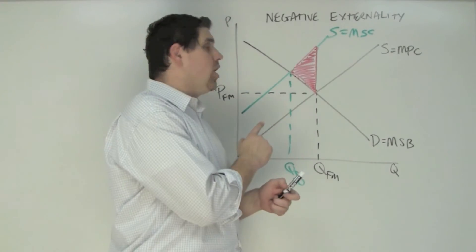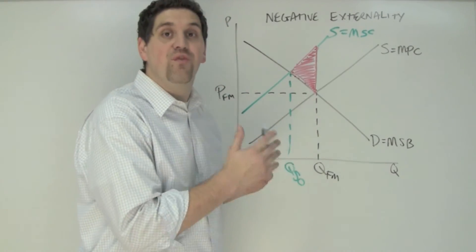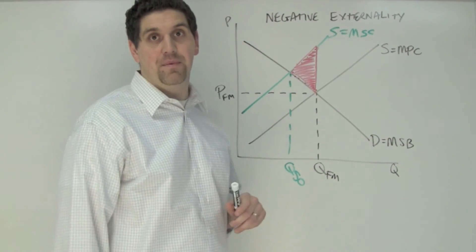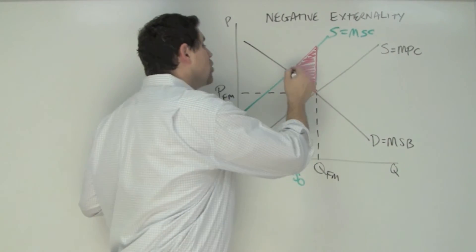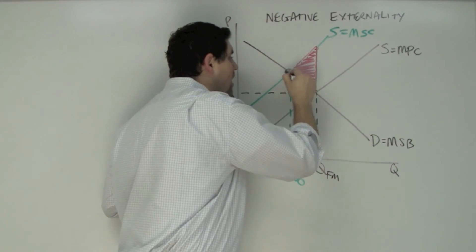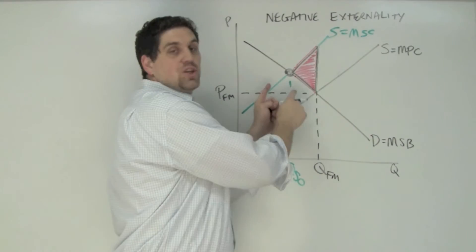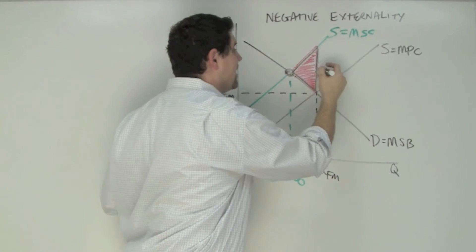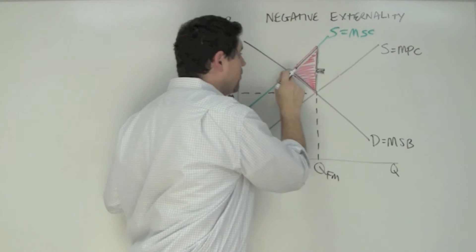I'm going to show you a little trick for finding deadweight loss that I learned straight from the chief reader of the AP Economics Exam. If you want to find deadweight loss, circle the price and quantity that society actually wants to produce. This triangle of deadweight loss will always point like an arrow to this point.